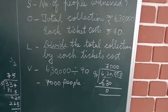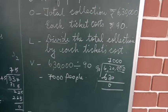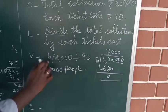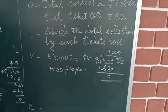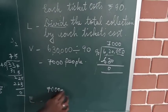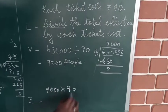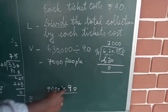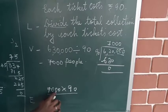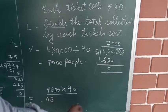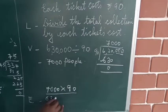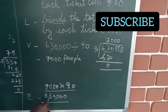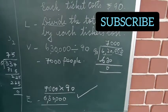Now I am going to examine my answer. The opposite of division is multiplication. When I multiply 7,000 by 90, I should get 6,30,000. Let's check: 7,000 multiplied by 90. Leave off the zeros and multiply only the numbers: seven nines are 63. Then count the total zeros — there are 4 zeros. So 63 followed by four zeros gives 6,30,000. My answer is correct — I have examined.